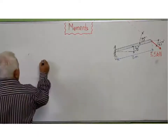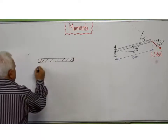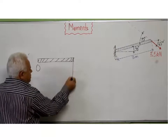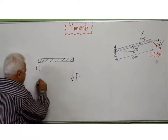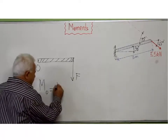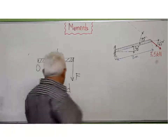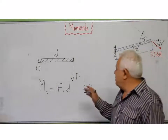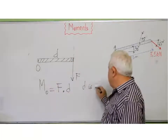Suppose we have a bar like this, and I've got a point O here. On this bar we apply a force F. In physics we define the moment about O — we write it M subscript O — as F times D. It is very important to notice that D here is the perpendicular distance from the line of action of F to the point O.